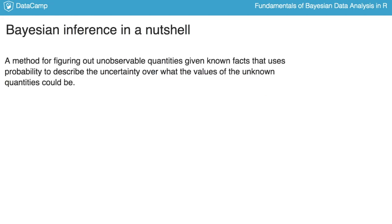In a nutshell, what is Bayesian inference? Bayesian inference is a method for figuring out unknown or unobservable quantities given known facts. There are other inference methods for this, but what makes Bayesian inference Bayesian is that it uses probability to describe the uncertainty over what the values of these unknown quantities could be.